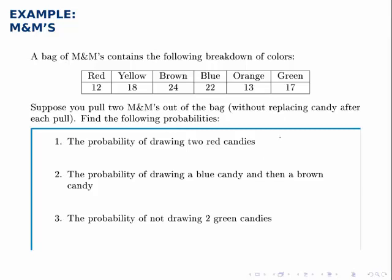The probability of drawing two red candies is the probability of drawing a red candy the first time, which is 12 out of 106, since there are 106 total candies if you add up all the colors, times the probability of drawing a red candy the second time if we drew one the first time. So if we drew one the first time, there's 105 candies left, 11 of which are red because the first one is also red.